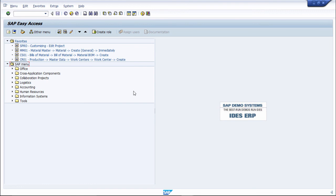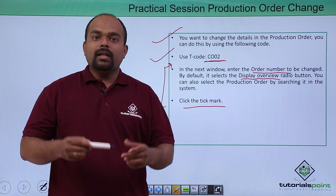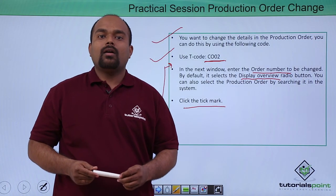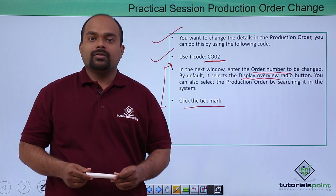Like this we can change an order using the transaction code CO02. In this video, we have seen how the production order will be changed. Thanks a lot.